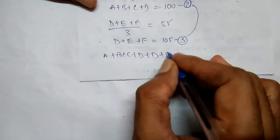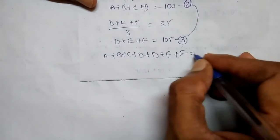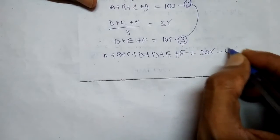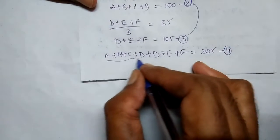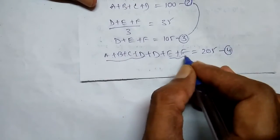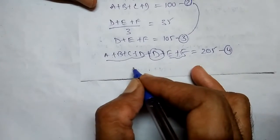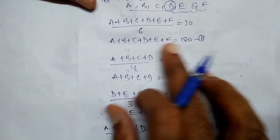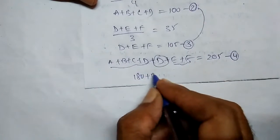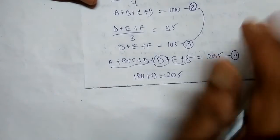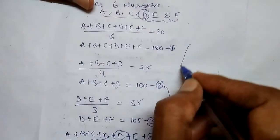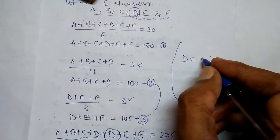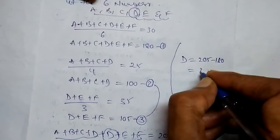Adding the second and third equations: A plus B plus C plus D plus E plus F plus D is equal to 100 plus 105, which is 205. Substituting the first equation value of 180, we get 180 plus D is equal to 205. So D is equal to 205 minus 180, which is 25.